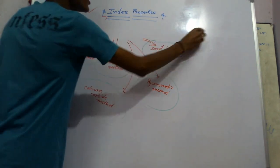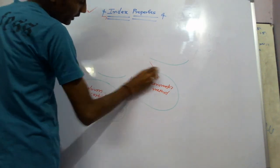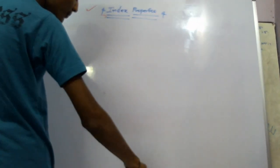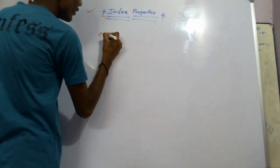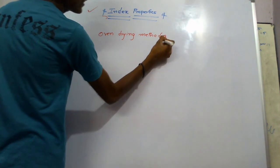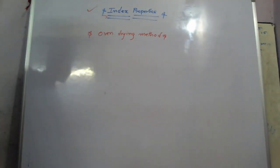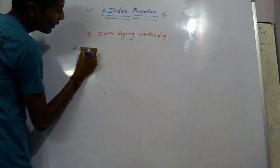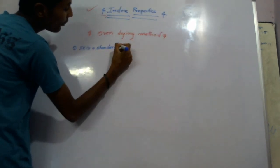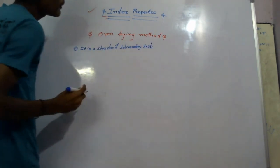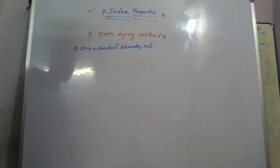Our first method is the oven drying method. It is a standard laboratory test that can be performed in the laboratory to determine the water content of a soil sample.